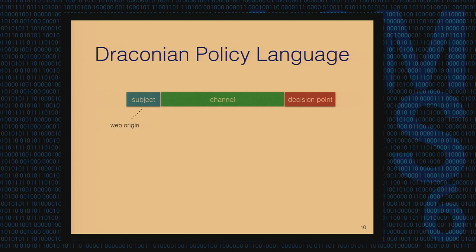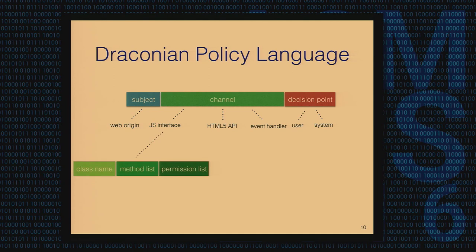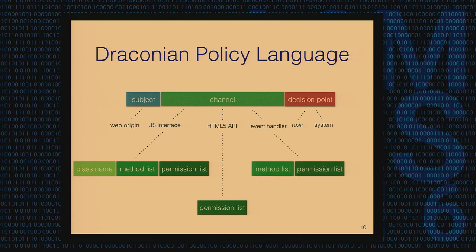As part of the Draco framework, we introduced the Draconian Policy Language for developers to express access characteristics they want assigned to origins. A rule has a subject — a web origin (HTTP or HTTPS, colon, slash, slash, then the domain) — a channel, and a decision point. There are three access channels: JavaScript interfaces, HTML5 APIs, and event handlers, and the decision can be made by the system or delegated to the user. For JavaScript interfaces, you specify the class name, the list of methods to expose, and the permissions to give to that subject. For HTML5 APIs, you only need to list permissions. For event handlers, you list the event handler method name plus permissions.